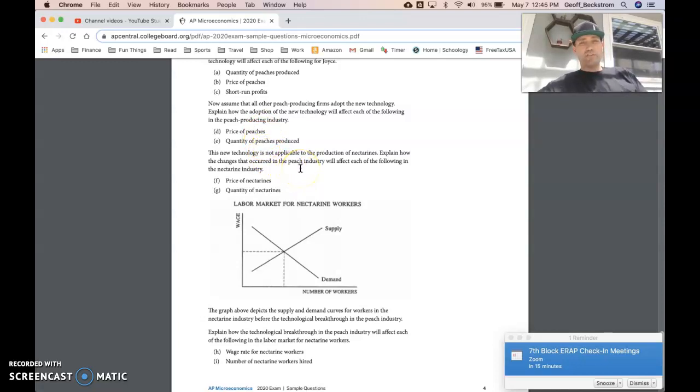This new technology is not available to those poor nectarine producers. Explain how the changes that occurred in the peach industry will affect the following in the nectarine industry. So since peaches and nectarines are substitute goods, lower prices for peaches means less demand for nectarines. So demand will shift in in the nectarine market which decreases the quantity and price of nectarines exchanged in the market. So price goes down, quantity goes down.